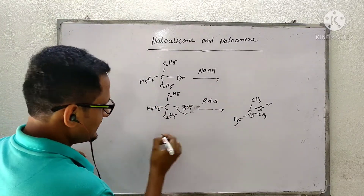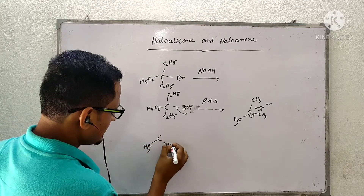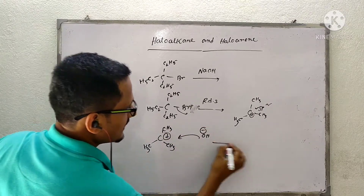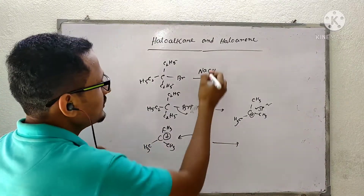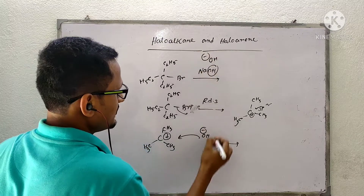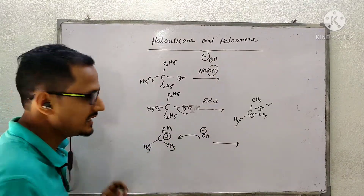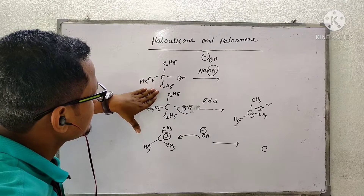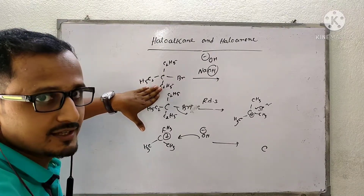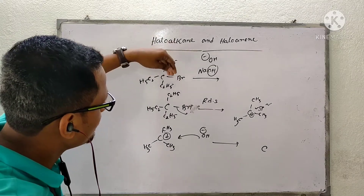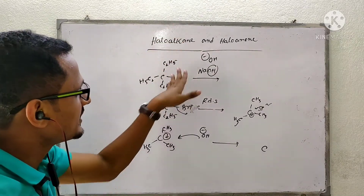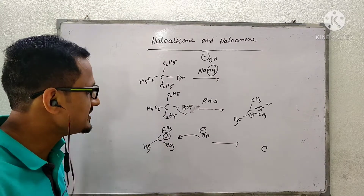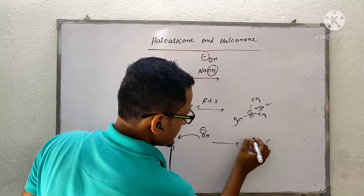In the second step, this carbocation can have both frontal and backside attack by the nucleophile — OH⁻ coming in. If the attack is from the front, meaning the same side from where the bromine was released, the OH⁻ will attack from there. The configuration will remain the same, and this is called retention of configuration.